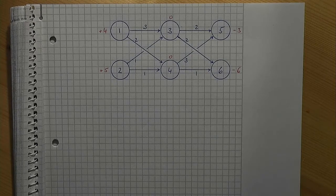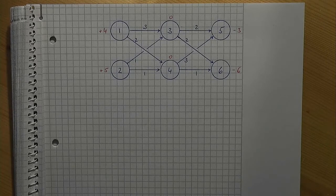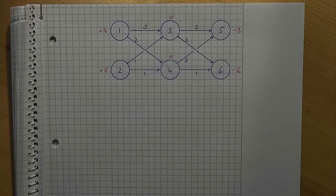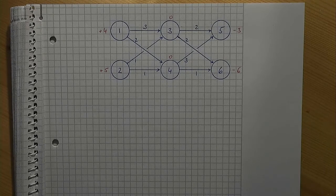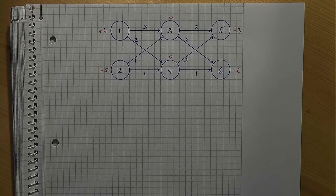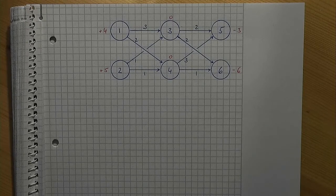And third there are intermediate nodes without supply and without demand. Nodes 3 and 4 are intermediate nodes in our example. To keep things simple we assume that the total supply equals the total demand. If this is not the case dummy nodes can be introduced so that our assumption is without loss of generality.